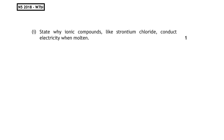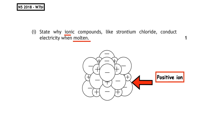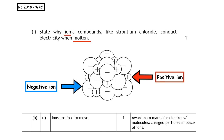This past paper question is from the National 5, 2018, written 7b part 1. State why ionic compounds such as strontium chloride conduct electricity when molten. Conductivity is the flow of charged particles. The charged particles in ionic compounds are ions. They can conduct when molten because the ions are free to move.